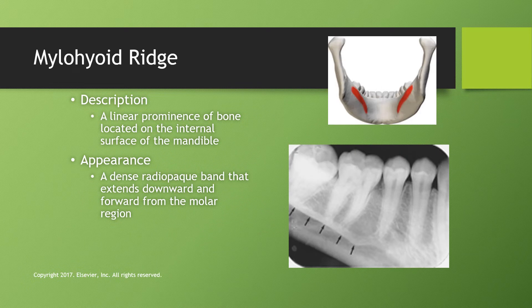The mylohyoid ridge — also called the internal oblique ridge — is a linear prominence of bone on the internal surface of the mandible. If you run your tongue over to your molars and go straight down above the submandibular fossa, you can feel that linear ridge traveling up toward the premolars. It appears as a dense radiopaque band that extends downward and forward from the molar region.